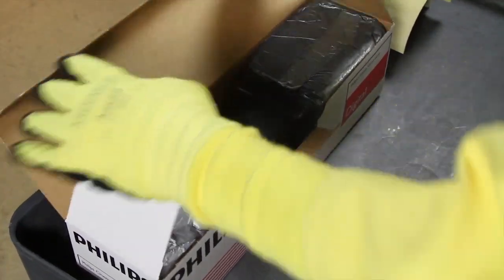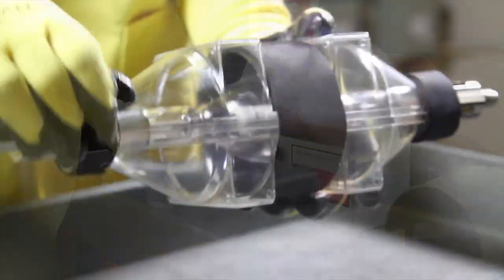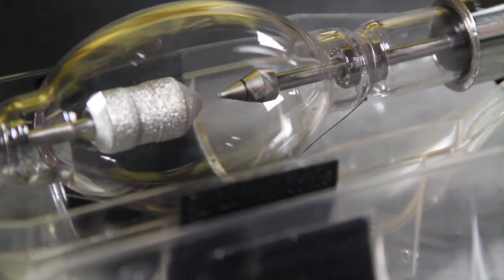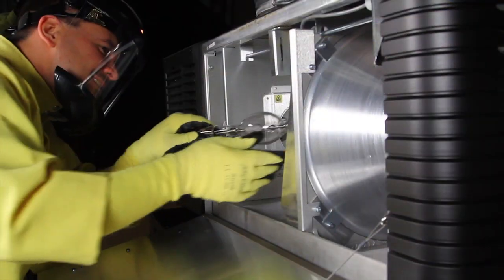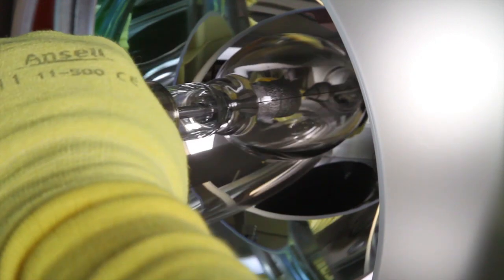Now you're ready to install the replacement lamp. Carefully remove the new lamp from its protective carrier. Visually inspect for any damage. Slide the lamp into position, being careful not to touch the reflector.